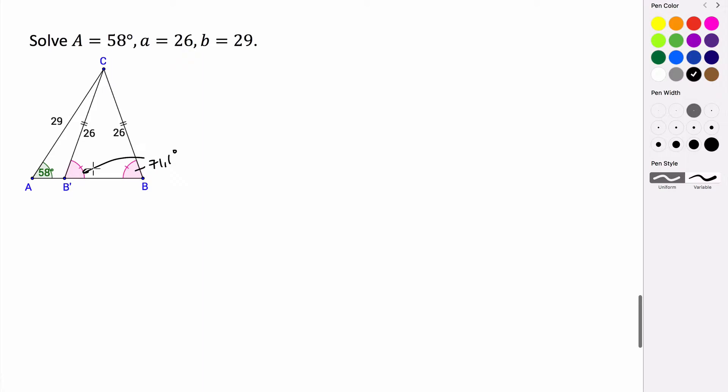This is going to help us because if we're trying to find and solve this smaller triangle here, we know that these two angles here are supplementary, meaning that they sum to be 180 degrees. So we're going to use the fact that this angle here is 71.1 degrees to help us solve our second triangle.